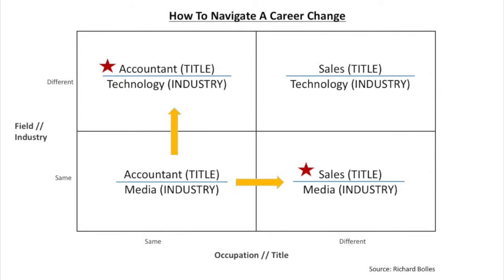So the two easiest approaches to a career change are to focus on moving one step at a time. Either make a change in your job title or your industry, but not both at the same time.